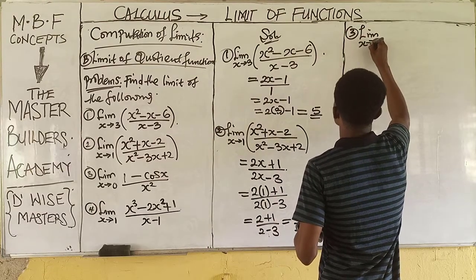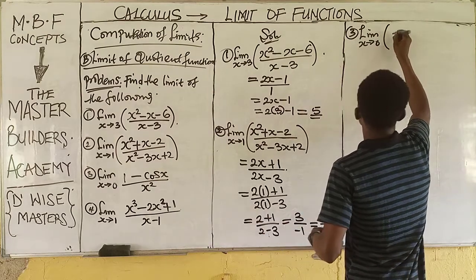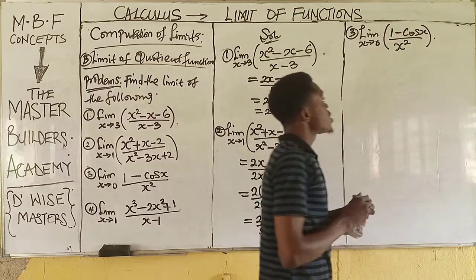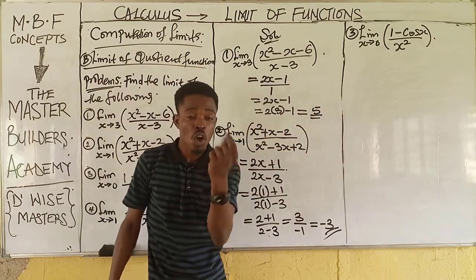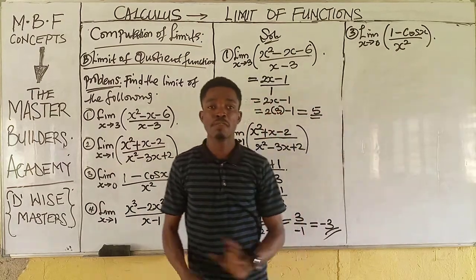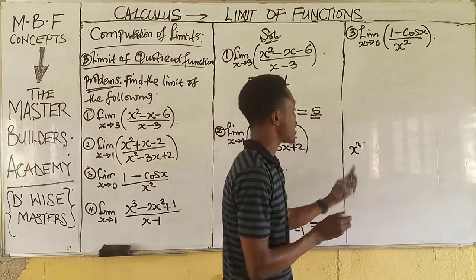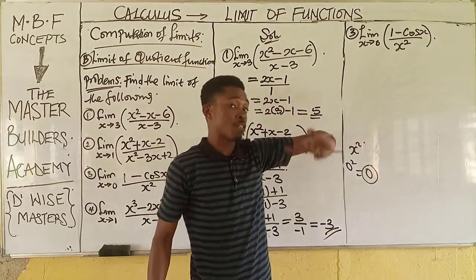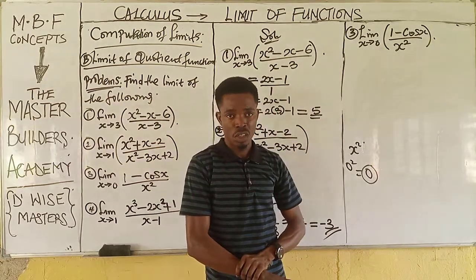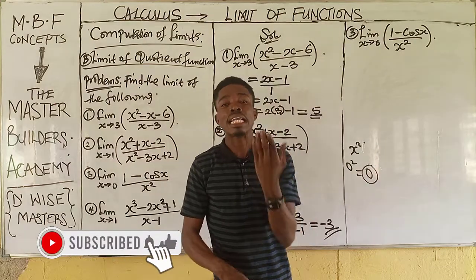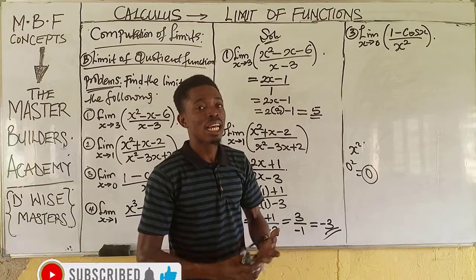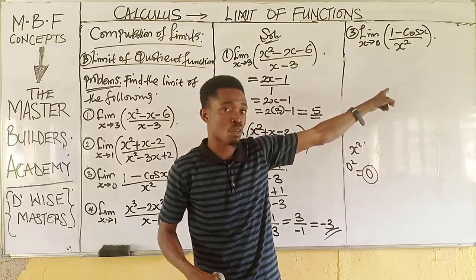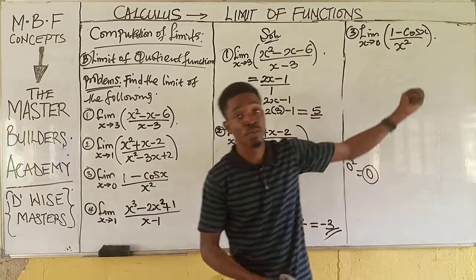Question number three: find the limit as x tends to 0 of (1 − cos x) over x². The denominator is x²; substituting x = 0 gives 0² = 0, so the expression is undefined. We need L'Hôpital's rule. Note that factorization method is limited here — there is no way to factorize the numerator and denominator to find a common factor in this question, which proves that factorization method is limited.